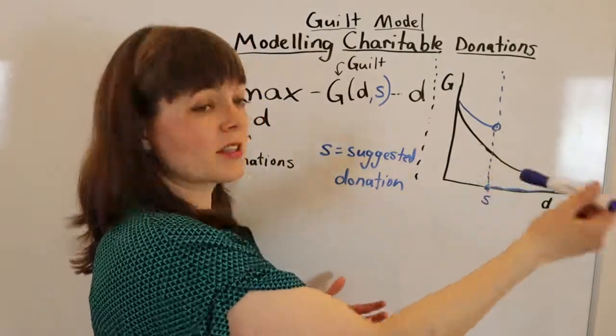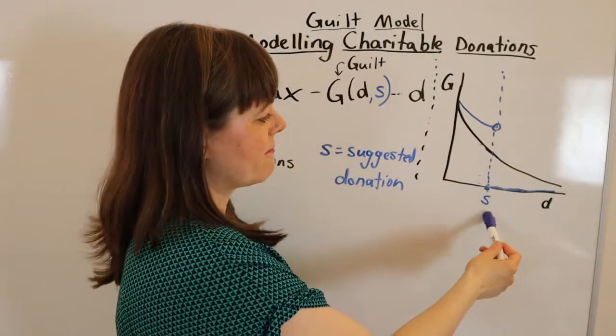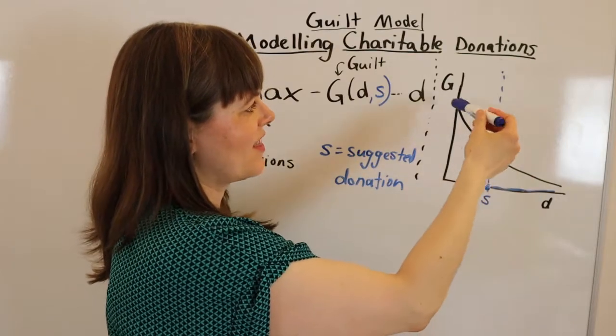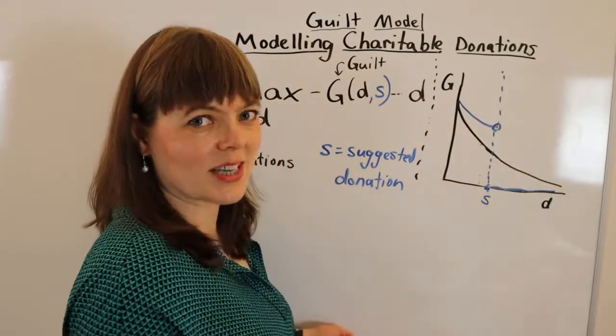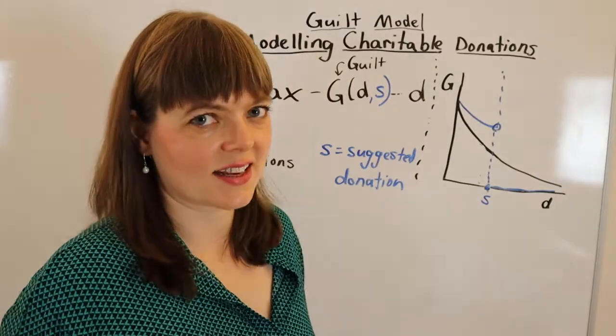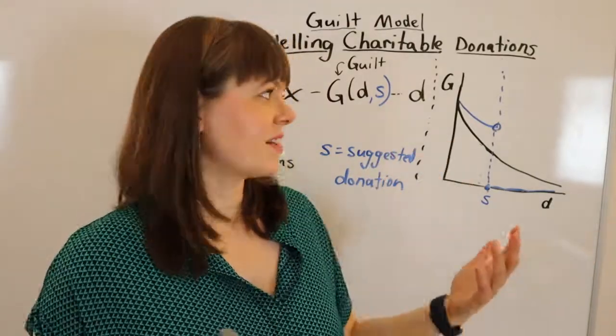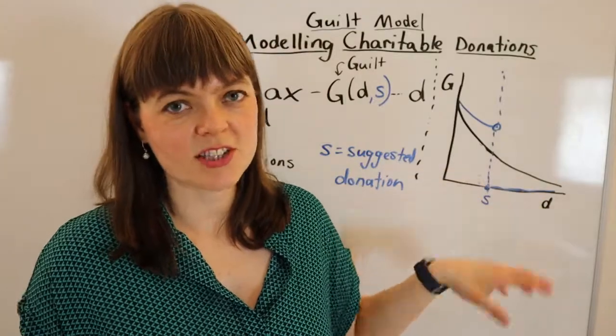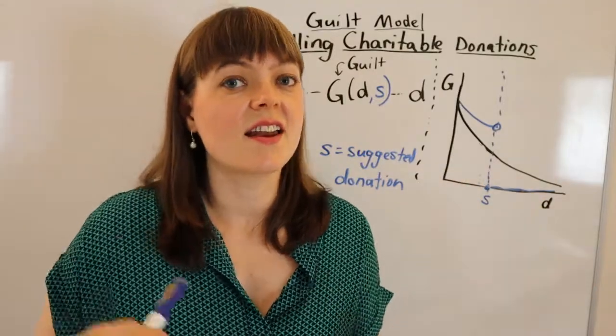So I think this is a reasonable way of modeling the effect of suggested donation on the guilt donation relationship, and of course that's going to influence the comparative statics.